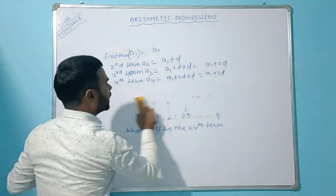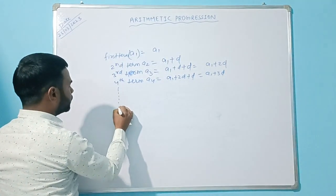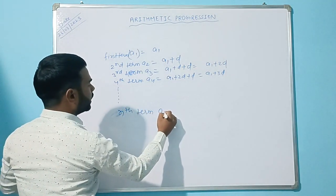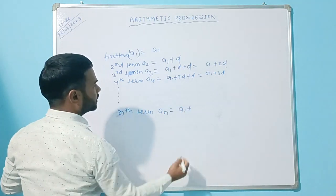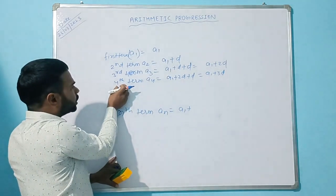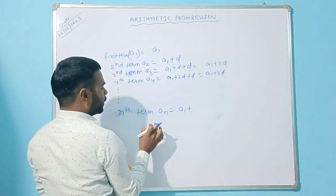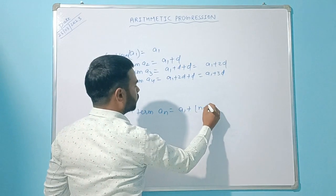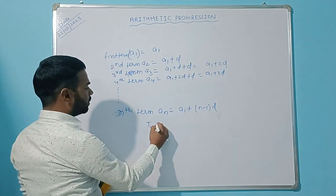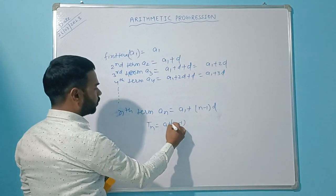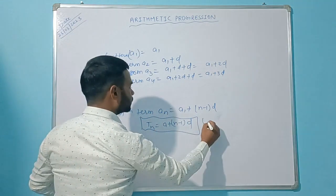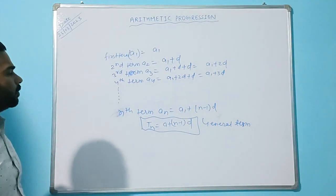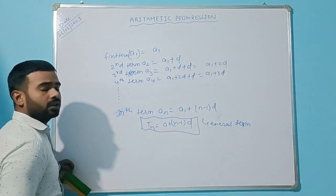In the same way, we can find the nth term. For the fourth term we subtract one from 4, so for the nth term: an = a1 + (n − 1) × d. We can write this as tn = a + (n − 1)d. This is our general term formula for finding the nth term of an AP.